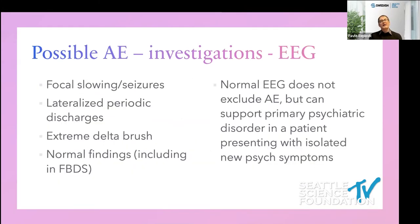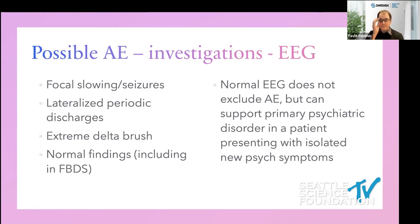On EEG, you're looking for focal slowing, seizures, lateralized periodic discharges, or extreme delta brush. But EEG can be normal, including during faciobrachial dystonic seizures. A normal EEG doesn't rule out autoimmune encephalitis, but it can be helpful in a person presenting with primary psychiatric disorder. There has been quite a bit of discussion recently about obtaining EEGs in newly presenting psychiatric patients.